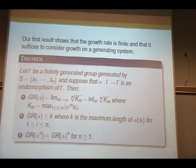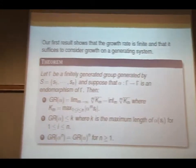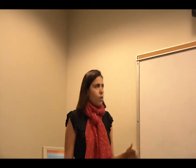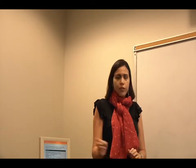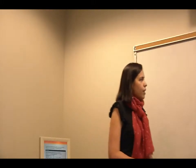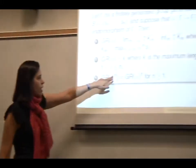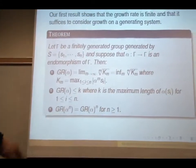So the other thing, as I mentioned, growth rate of alpha is less than or equal to K, where K is the maximum length of alpha(S_i) over the generators. And finally, if you take the growth rate of alpha^m is growth rate of alpha to power m.